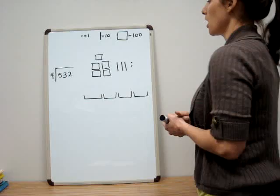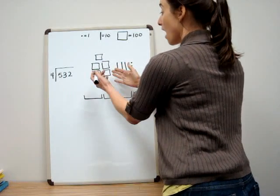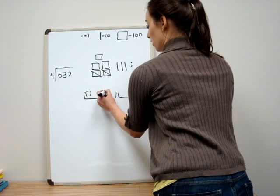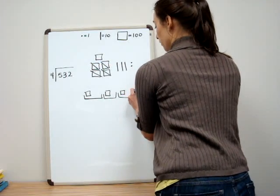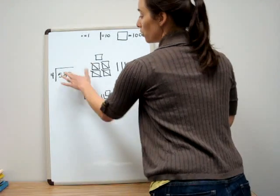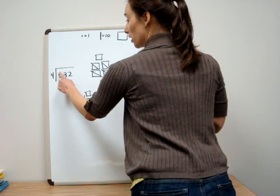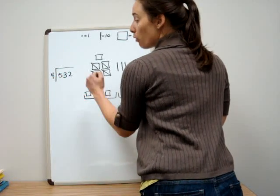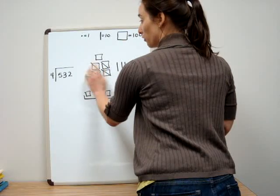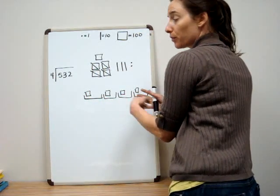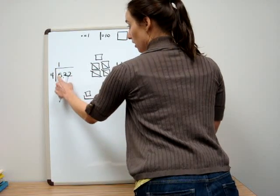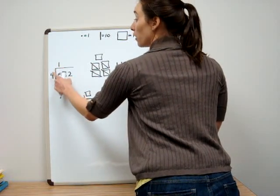Let's start divvying up. I can see that if I have five hundreds I have more than enough to put one in each group — one for each of the four groups. In our division algorithm, we start by looking at the five and seeing how many times four goes into five. What we're really saying is that five is in the hundreds place — I have five hundreds, and putting them into four groups means there's one hundred in each group. The quotient tells us how many are going into each group, so I indicate one hundred, that's why it's in the hundreds place, going into each of the four groups.